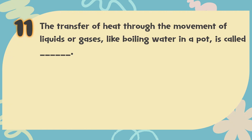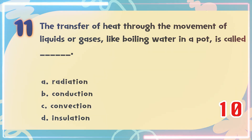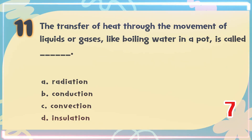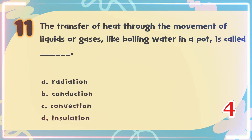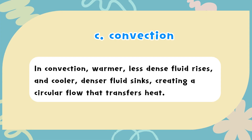Number 11. The transfer of heat through the movement of liquids or gases, like boiling water in a pot, is called blank. The choices are: A. Radiation, B. Conduction, C. Convection, D. Insulation. The correct answer is C. Convection. In convection, warmer, less dense fluid rises, and cooler, denser fluid sinks, creating a circular flow that transfers heat.